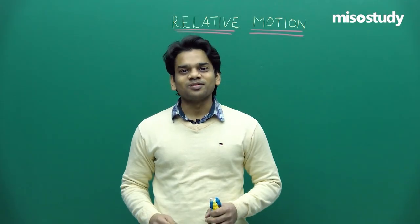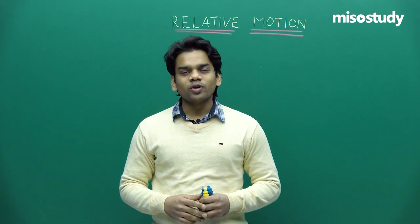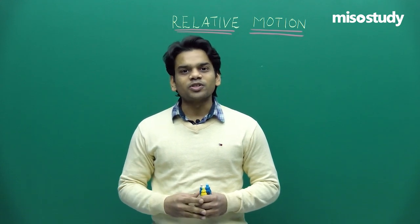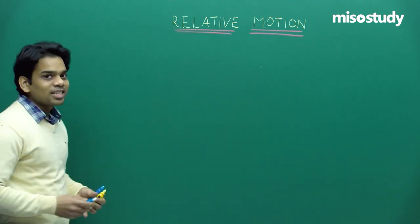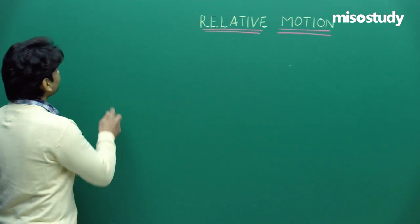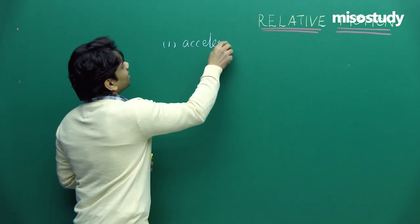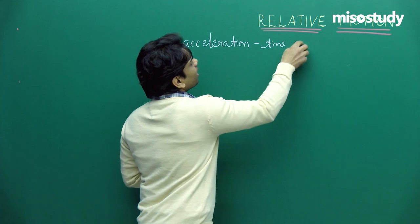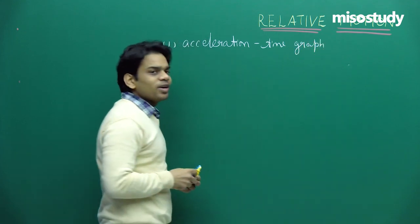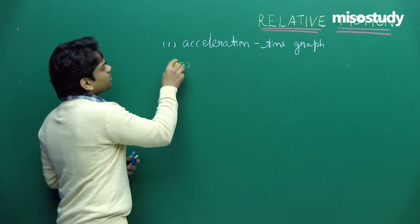Hello students, welcome to the class. Last class we studied about graphical representation of variables — displacement-time and velocity-time graphs. Today's class will start with the acceleration-time graph and later we'll study about relative motion. The first part is a continuation from the last class — the acceleration-time graph.